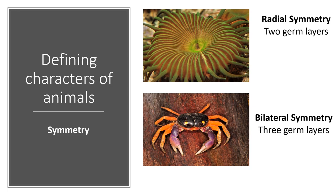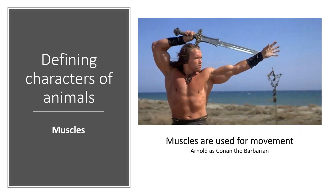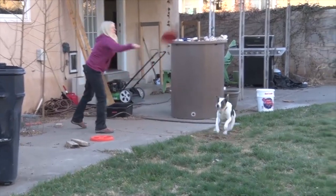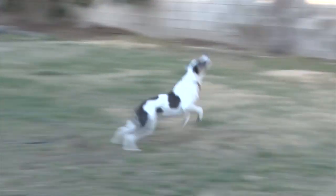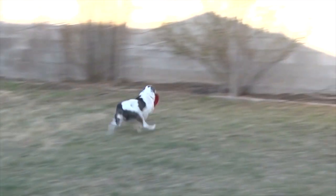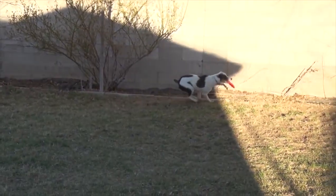A fourth characteristic of animals is muscles. Animals move around and they use muscles to do that. Here's an image of Arnold Schwarzenegger as Conan the Barbarian, an early 80s film. We're really familiar with how muscles work on a day-to-day basis — here's a video of my dog playing catch in the backyard. I think he dreams about this at night.